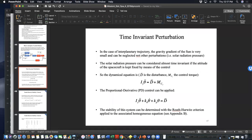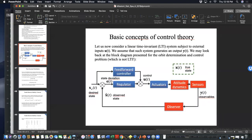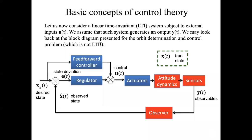Yesterday, we concluded the second part of the lecture by introducing the PD control scheme. Today, we are going to show the PD — proportional derivative — control scheme, its advantages and disadvantages, and why we need a PID control scheme with the addition of an integral control. In particular, we will discuss how the reaction wheel enables the use of this controller in the linear time invariant system of the attitude control scheme.